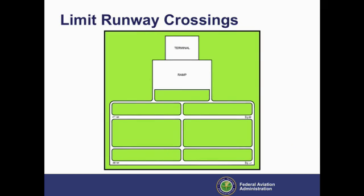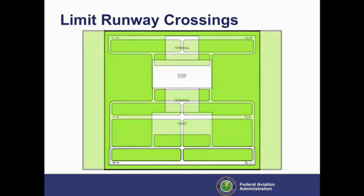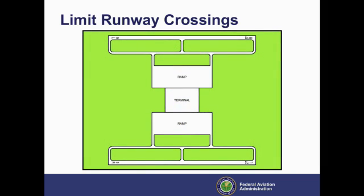During initial airport planning, focus on reducing airplane conflicts on the runway. In this example, the terminal is placed to the north of two parallel runways. Airplanes using runway 9 right, 27 left must cross the other runway to reach the terminal. This alternative design places the terminal building between the parallel runways, eliminating the need for airplanes to cross a runway when taxiing between the runways and the terminal.